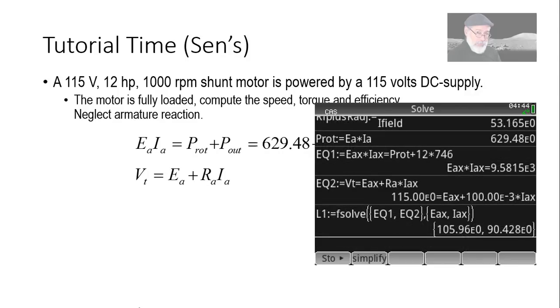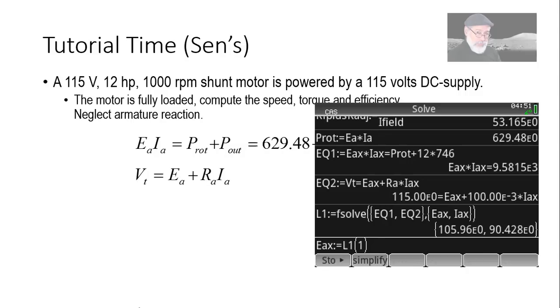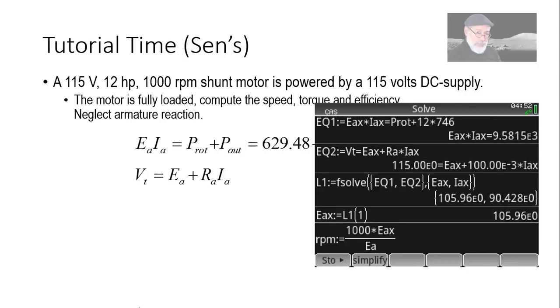Now we use the F solver, the floating point solver, for the system of equations and find the values. And those are the values. I put that in the list variable L1 and extract what is Eax, the first one, 106 volts.